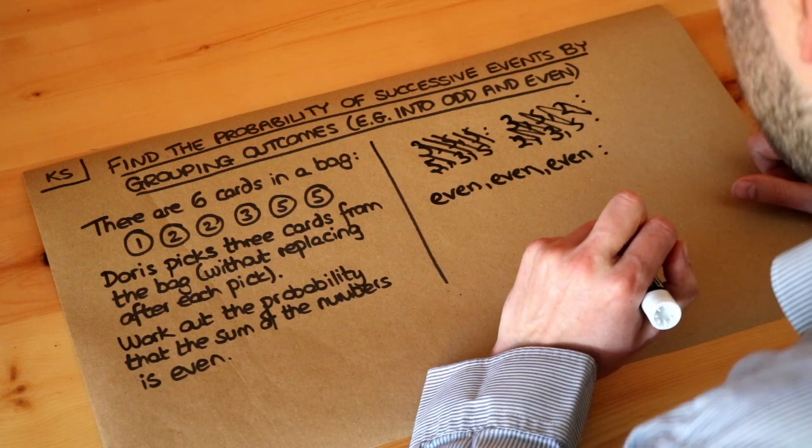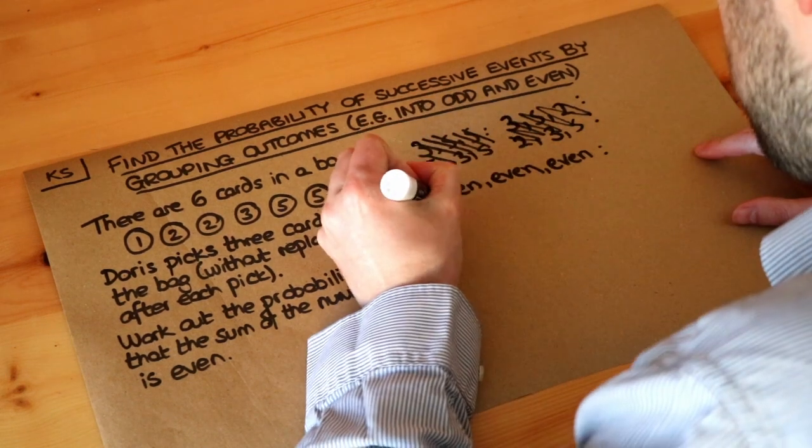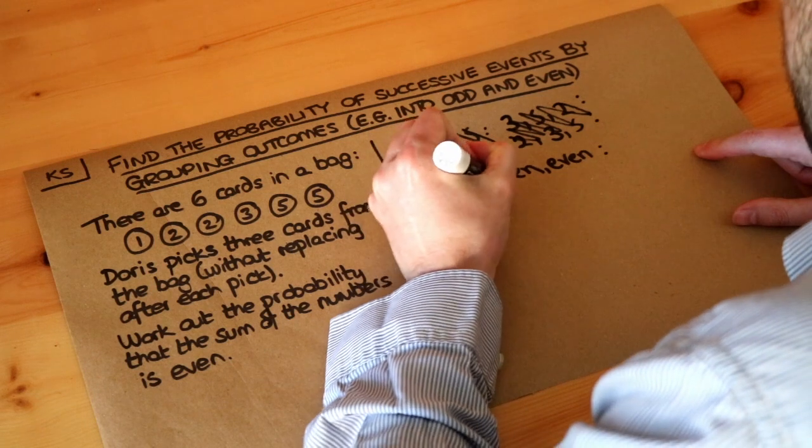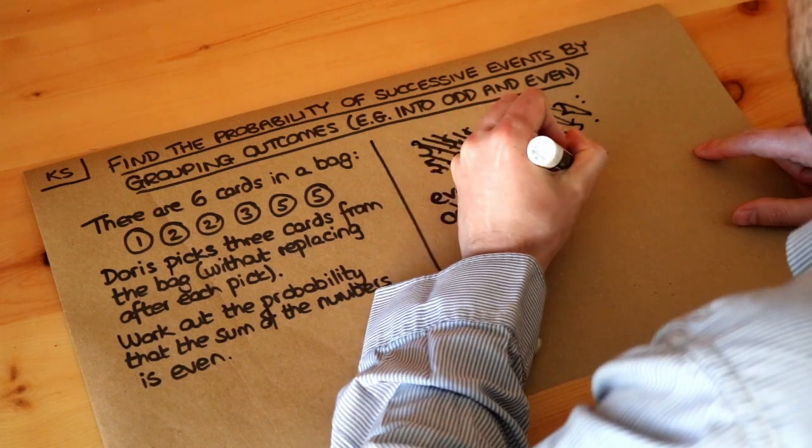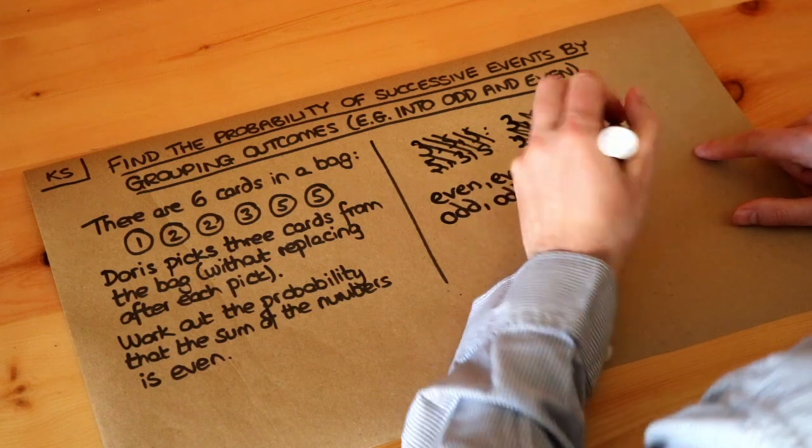What other possibilities are there? Well, we could have also had odd, odd, even. Because odd plus odd is even, plus even is still even.